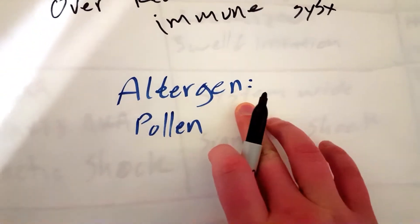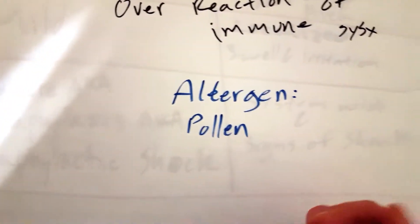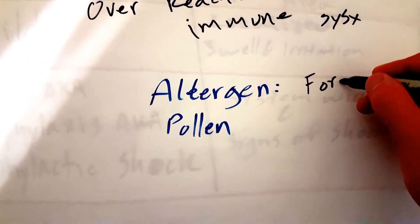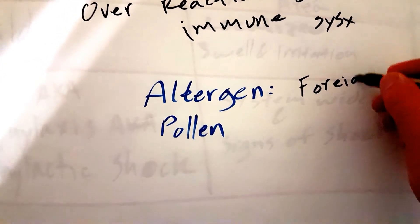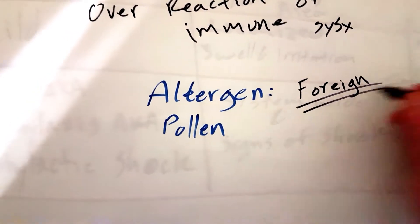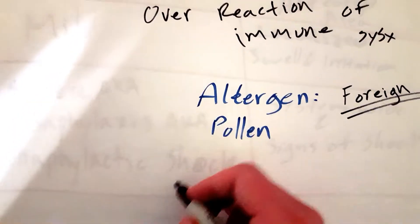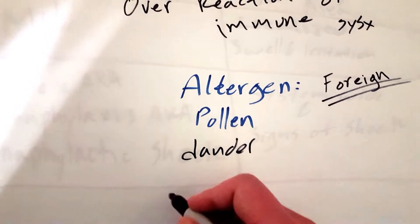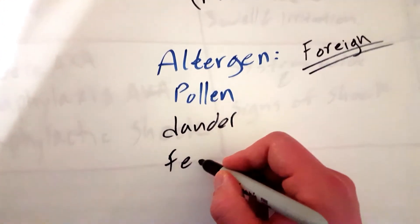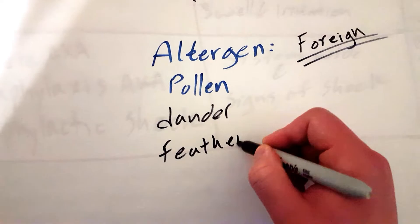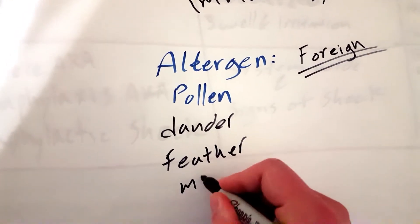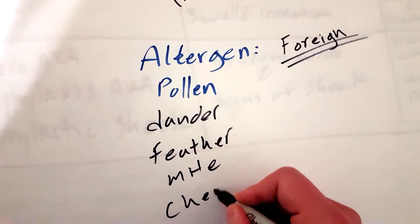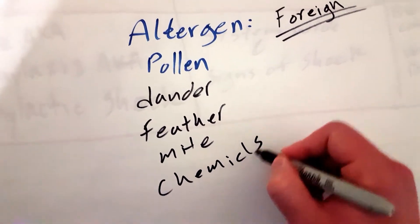What causes an allergic reaction? These are called allergens. An allergen is really a foreign body — anything that doesn't really belong in your body. It could be pollen, it could be dander from an animal, even feathers can be considered an allergen, mites, chemicals — the list goes on and on.